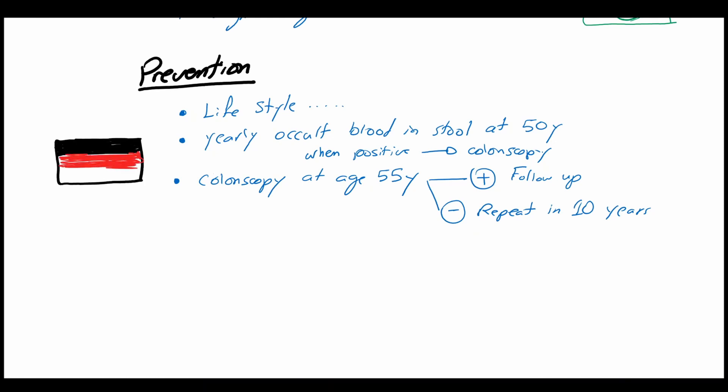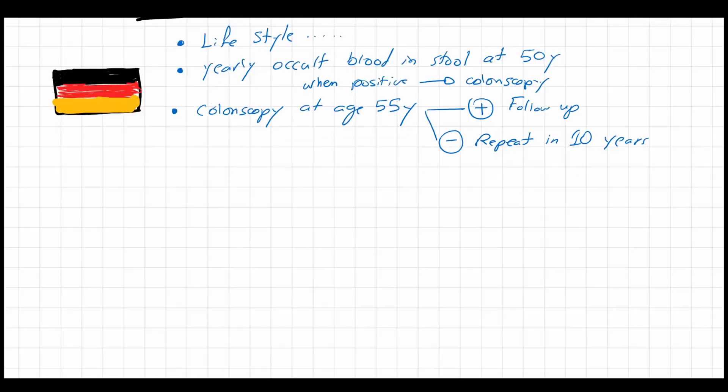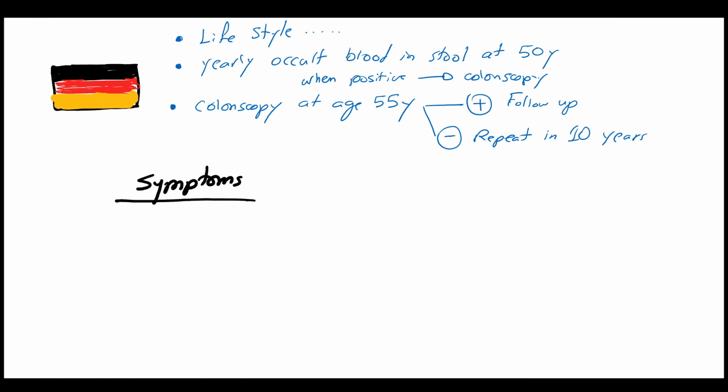This was according to the German guidelines which is somehow widely accepted. Symptoms of colorectal carcinoma depends on the site of the carcinoma. For example, for rectal and descending colon carcinoma, the most common feature is altered bowel habits or bleeding per rectum.